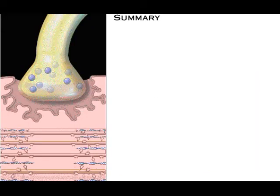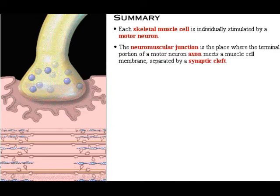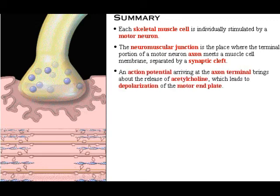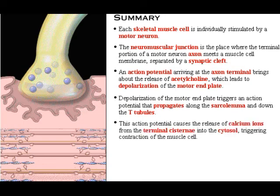Here's a summary of what we've covered. Each skeletal muscle cell is individually stimulated by a motor neuron. The neuromuscular junction is the place where the terminal portion of a motor neuron axon meets a muscle cell membrane, separated by a synaptic cleft. An action potential arriving at the axon terminal brings about the release of acetylcholine, which leads to depolarization of the motor end plate. Depolarization of the motor end plate triggers an action potential that propagates along the sarcolemma and down the T-tubules. This action potential causes the release of calcium ions from the terminal cisternae into the cytosol, triggering contraction of the muscle cell.